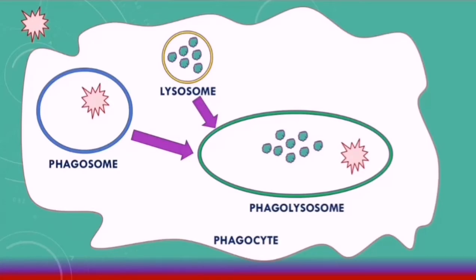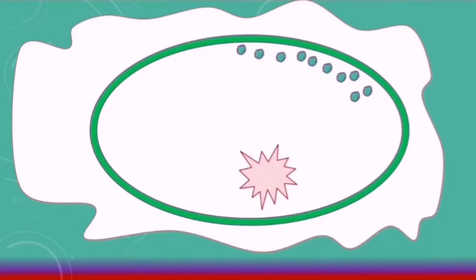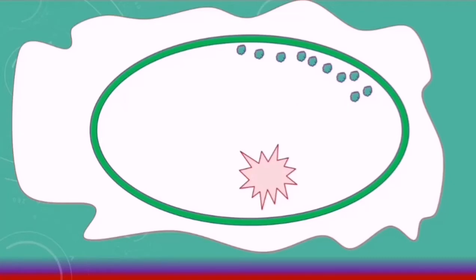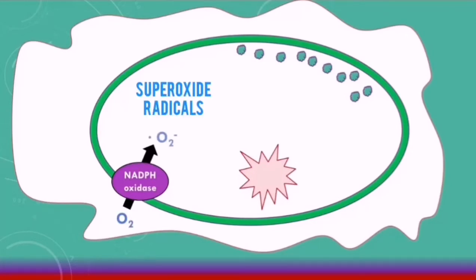Phagolysosomes contain the antigen. Zooming in, we have the macrophage with the phagolysosome containing the antigen and the lysosomal granules. On the membrane of the phagolysosome, there is an enzyme called the NADPH oxidase enzyme, which converts oxygen into superoxide radicals. These superoxide radicals can attack the antigens and help destroy them.